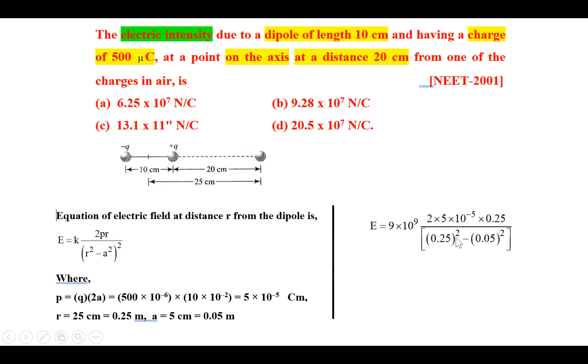We have put all the values. Solve this. The answer will be 6.25 × 10^7 newton per coulomb. So our answer is (a).